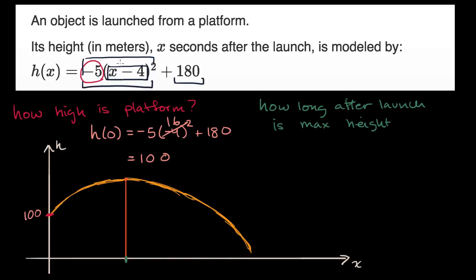So just by looking at this, you say, what makes this zero? Well, four. X equals four will make this zero. If I were to write h of four, this term is going to go to zero and you're left with the 180. So the maximum height is 180. It happens four seconds after launch.